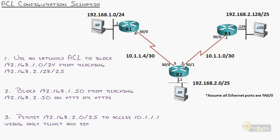Now I'd like you to pause the nugget and see if you can do number three on your own — even if you don't have Cisco IOS in front of you, write it down on paper. That's where you really get used to the syntax. Scenario three: permit 192.168.2.0/25 to access 10.1.1.1 using only telnet and SSH.